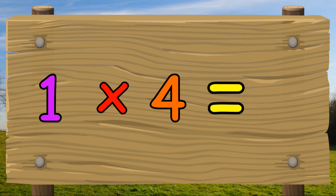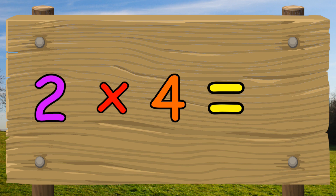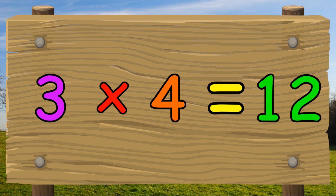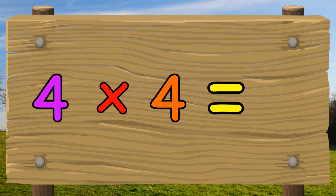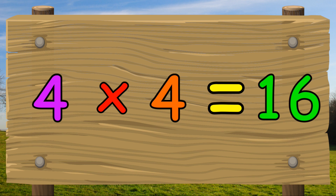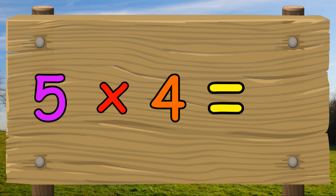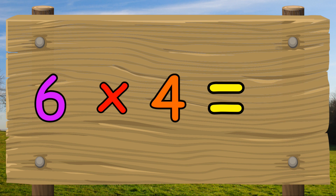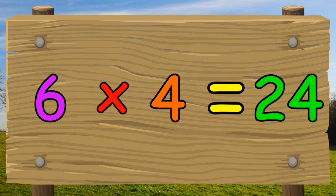One times four equals four. Two times four equals eight. Three times four equals twelve. Four times four equals sixteen. Five times four equals twenty. Six times four equals twenty-four.